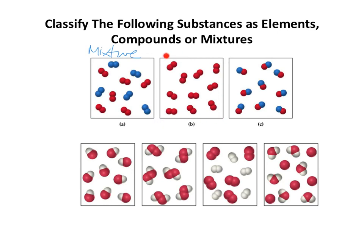Within box B, we've only got one type of atom — the red atom — so that must be an element. In box C, we've got a red atom bonded to a blue atom, again red bonded to blue, and all these species are identical: one red bonded to one blue. As we've got different atoms bonded to each other, this is a compound.